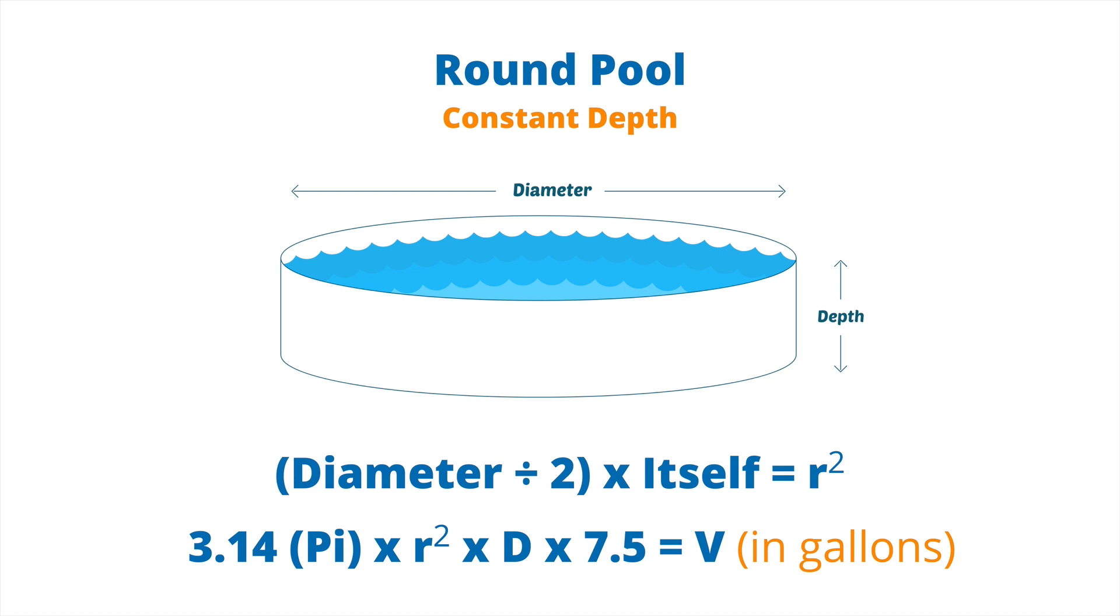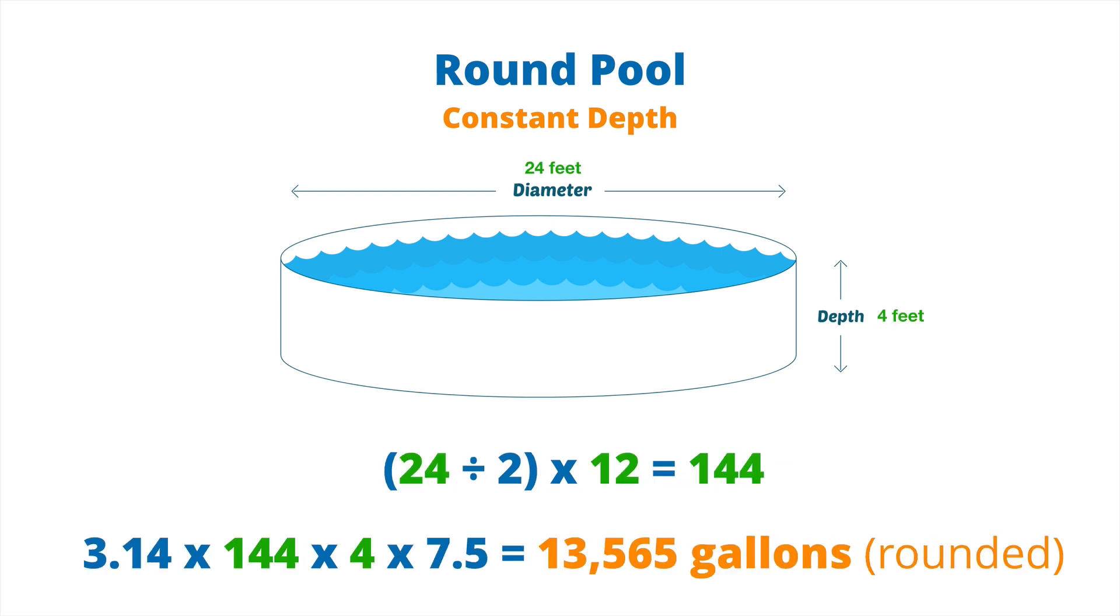Let's take an example because this is a lot of math. Let's take a 24 foot pool with a four foot depth. We take 24, divide it by two, that gives us 12. Then we multiply that by 12, multiply it onto itself, and we get 144. That's our radius squared number. So we take pi at 3.14 times the radius squared of 144 times the depth of 4 times 7.5, which gives us 13,565 gallons. I have rounded that up because I ended up with a decimal, and I just rounded it up to the nearest gallon, which I highly suggest that you do.